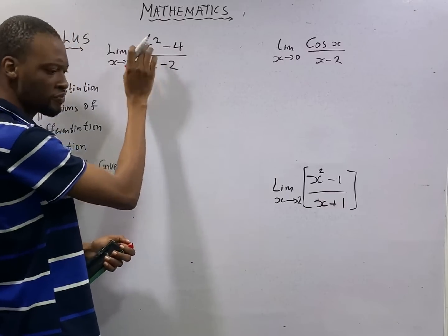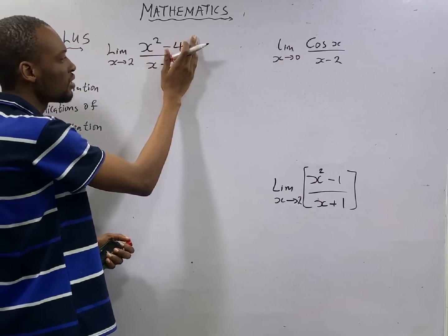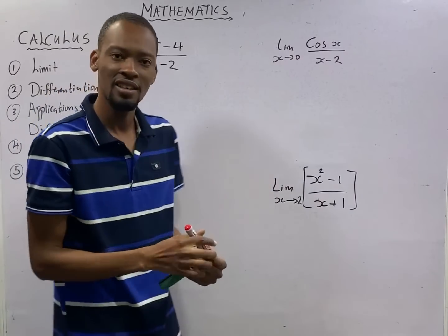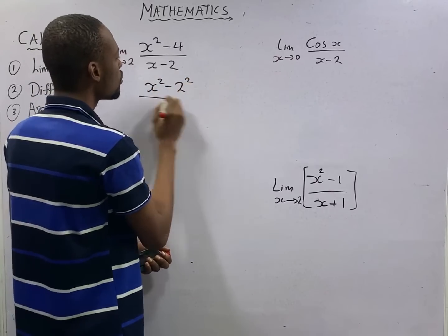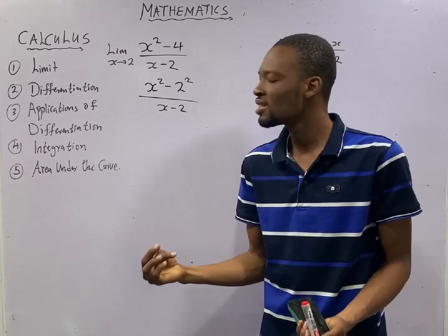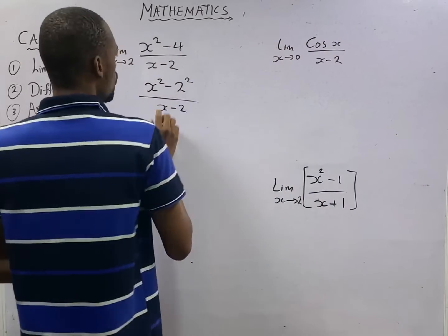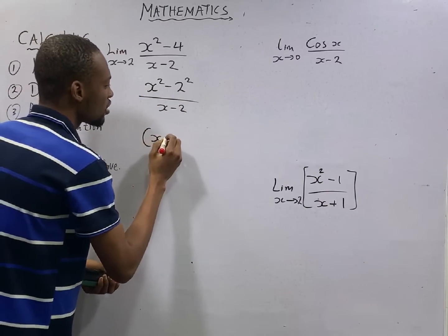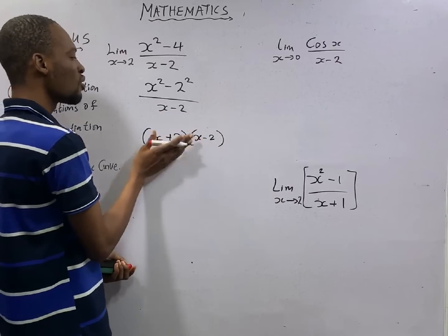Looking at this numerator, this is s squared minus 4. There is a way we can simplify here. If here is s squared, how do we get a sphere from here so that life can start from there? From indices, we know that this is the same thing as s squared minus 2 squared over s minus 2. We actually did not change anything because 2 squared is the same thing as 4.